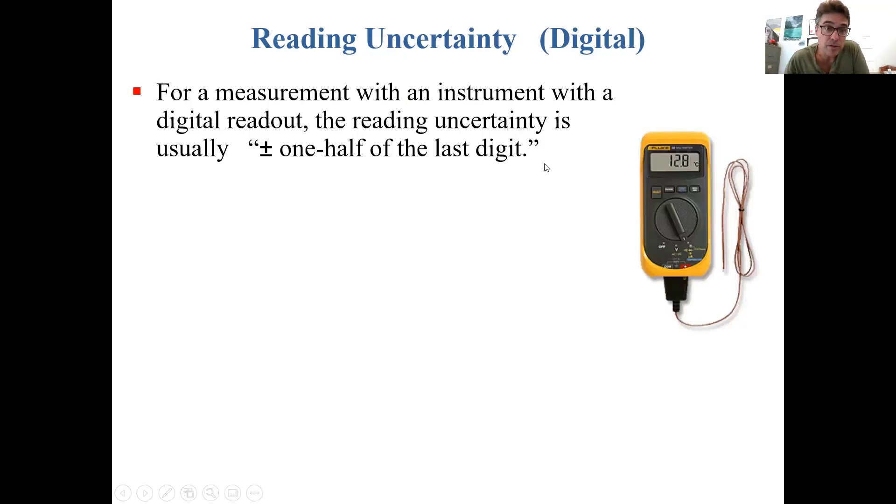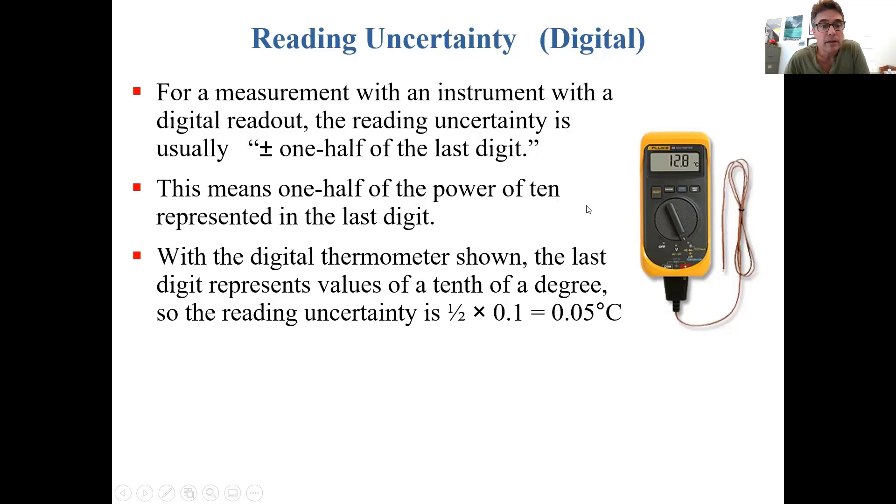There's also a reading uncertainty for digital instruments. For example, with the digital thermometer shown, the last digit represents values of a tenth of a degree. So it says 12.8 degrees celsius. The reading uncertainty is plus or minus one half of that last tens column. In this case 0.1, so half of 0.1 is 0.05. The reading uncertainty for this digital instrument is 0.05 degrees celsius. So you would write this as 12.80 plus or minus 0.05 degrees celsius.